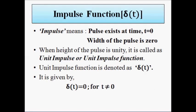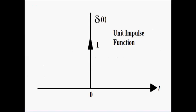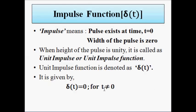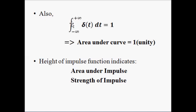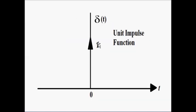If the amplitude had any other value, such as 'a', it would be a general impulse function. The unit impulse function has amplitude value 1. It only occurs at t equals 0 and is non-existent at any other time. It follows the relationship that the integral from −∞ to +∞ of δ(t) dt equals 1, meaning the area under the curve is unity. The height of the pulse indicates the area and the strength of the impulse signal.